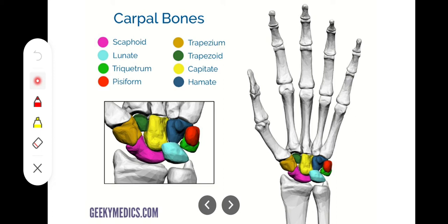The scaphoid is in the shape of a boat, as you can see. The lunate, as the name indicates, is in the form of a crescent or half moon. Then we have the triquetrum, which is a small bone and is pyramidal in shape. The pisiform bone — 'pisiform' is the name used for pea-shaped — so it's a pea-shaped bone, and it's a very small one.